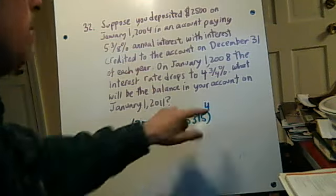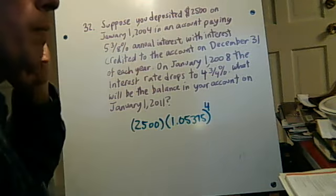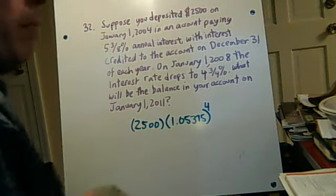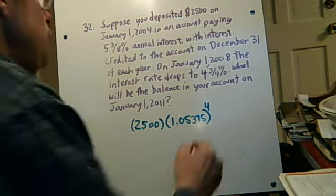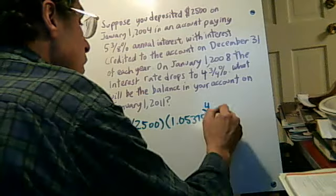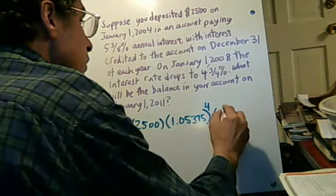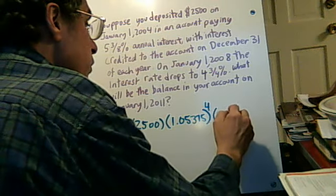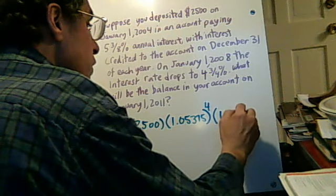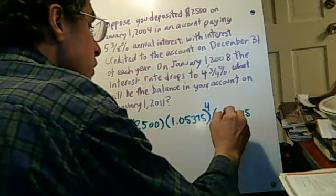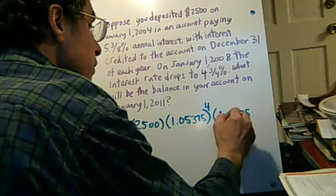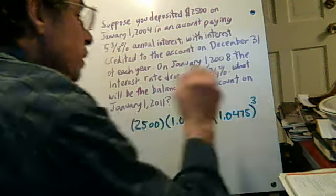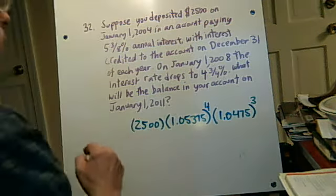You could actually calculate that amount, but we don't have to yet. We can continue by adding on the four and three-quarter percent, which is 1.0475 — because three-quarters is 0.75 — and that's for the next three years. That gives the total amount.